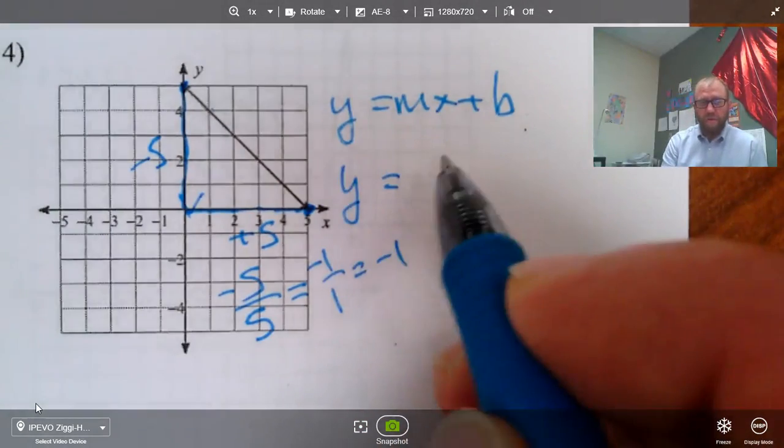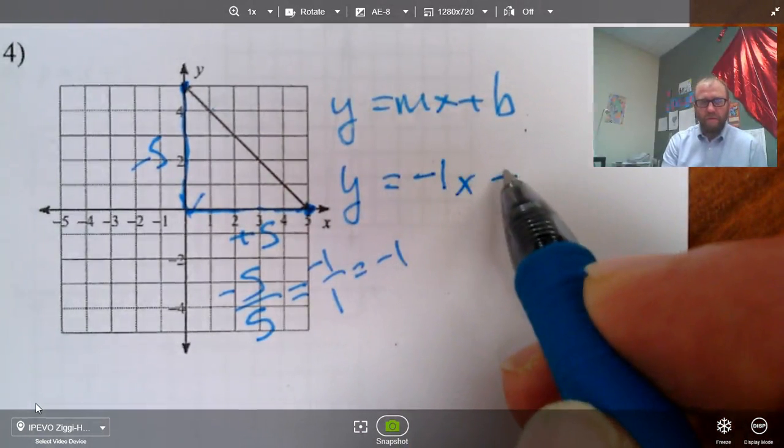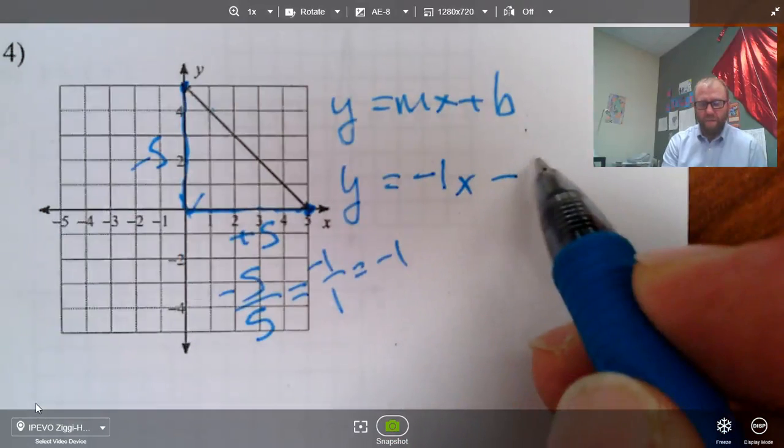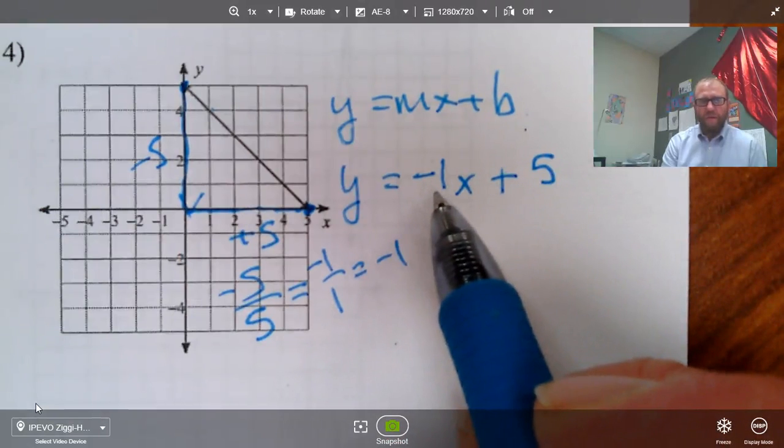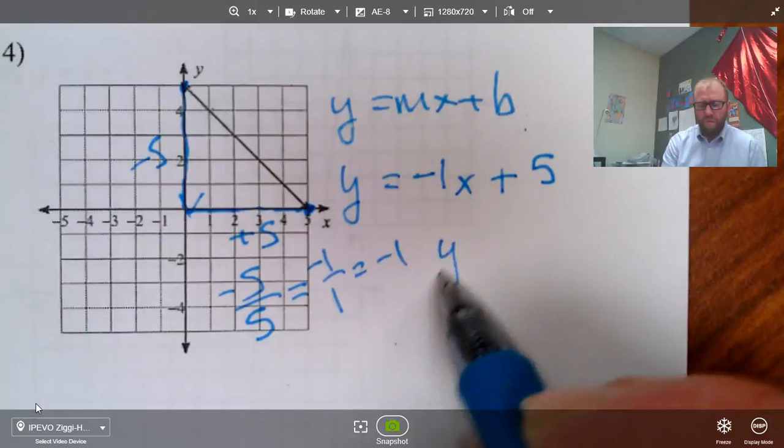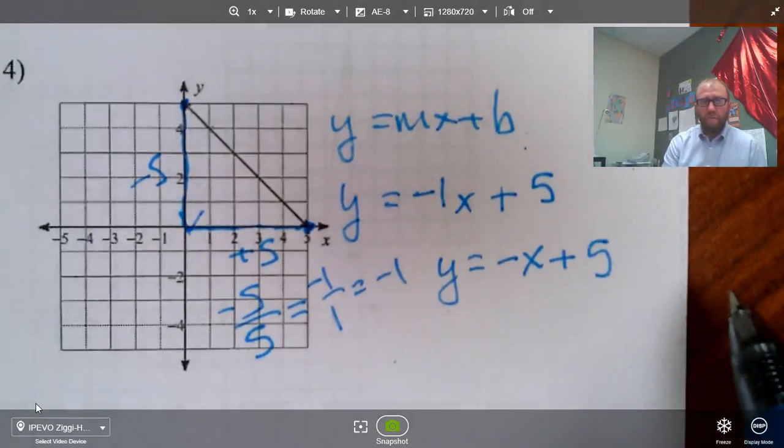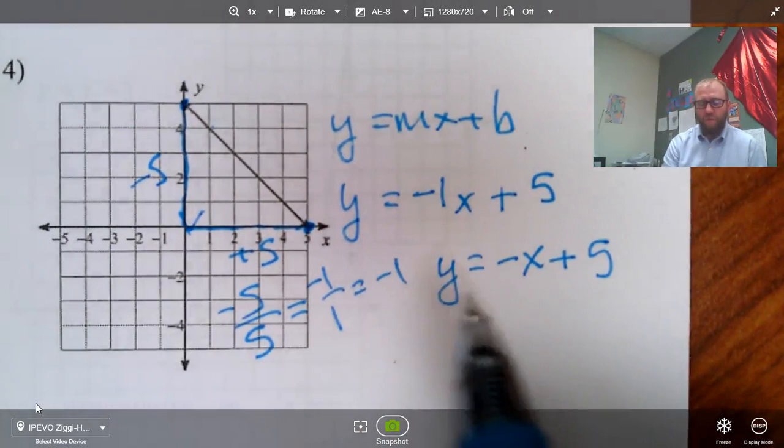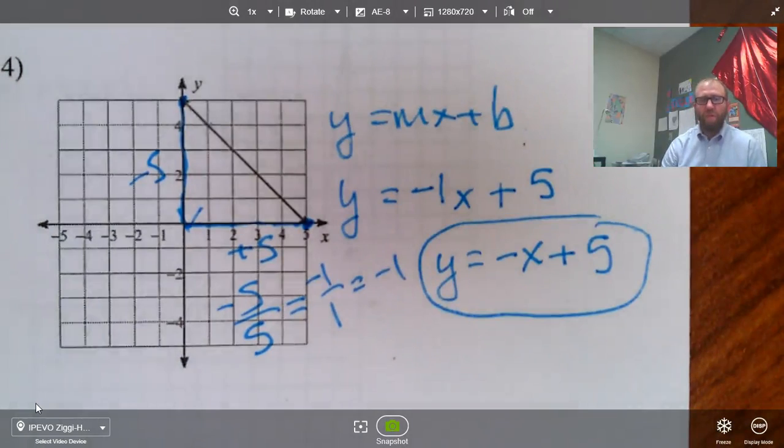All right. So y equals our slope, which is negative one x. Our y-intercept looks like it's five, positive five. All right. And normally if we had a negative one for our coefficient, we wouldn't write negative one. We would simply write y equals negative x plus five. And if it were a positive one, we would just write positive x. We don't usually write a one when a coefficient is one. So this would be the more standard way to write it.